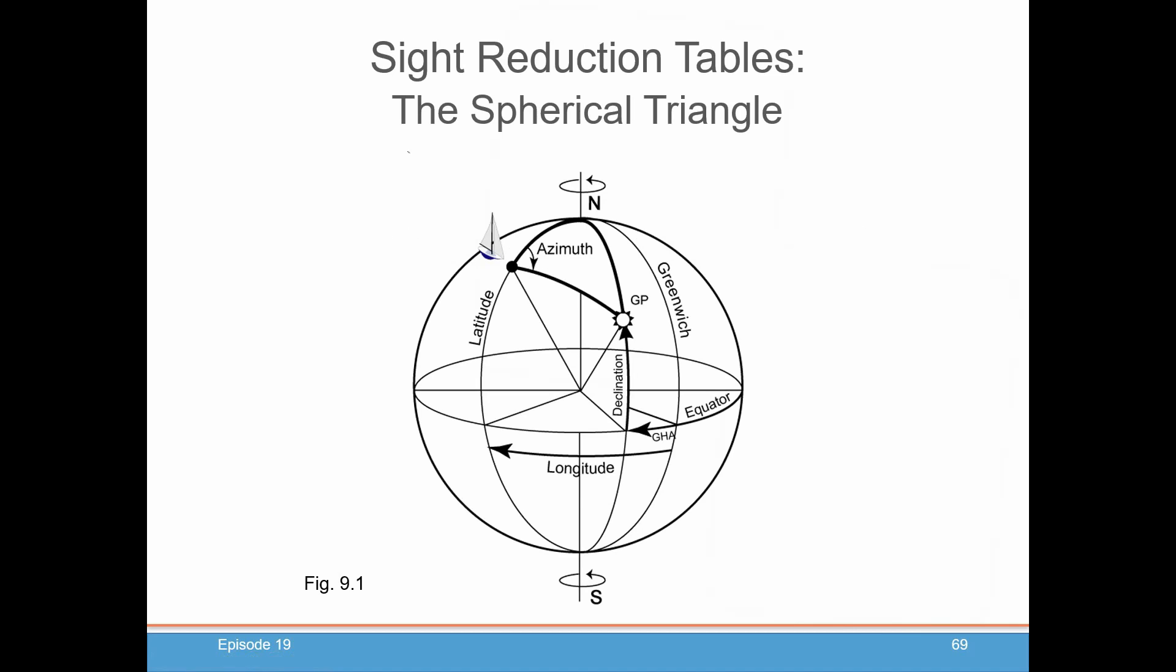On to the site reduction tables and the spherical triangle. So we need to just go back to some of our earlier episodes where we talked about what is the purpose of Celestial Navigation. And the purpose is to help you determine where you are on the earth when all you have are sights of the sun or the moon, stars and planets.